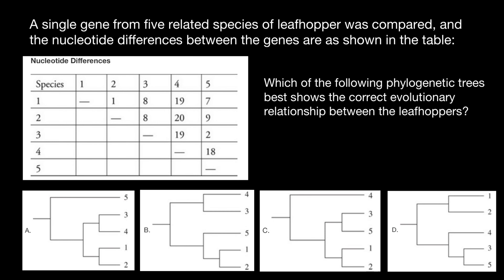Hello and welcome to Nikolai's genetics lessons. Today's question: a single gene from five related species of leaf hopper was compared, and nucleotide differences between the genes are as shown in the table. Which of the following phylogenetic trees best shows the correct evolutionary relationship between the leaf hoppers?